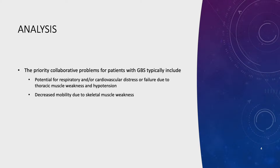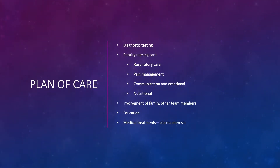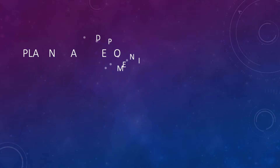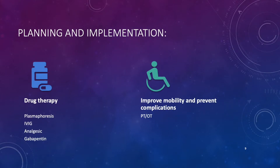Included in the plan of care should be diagnostic testing, priority nursing care consisting of respiratory care, pain management, communication and emotional support, and nutritional support. In addition, you should consider involvement of the family and other team members, because the GBS patient is quite complex and will require an enormous amount of care during the peak of the disease process. Education about the disease process, care and resources, and medical treatments including plasmapheresis should also be included. Patients will be receiving IV-IG, analgesics, and gabapentin.